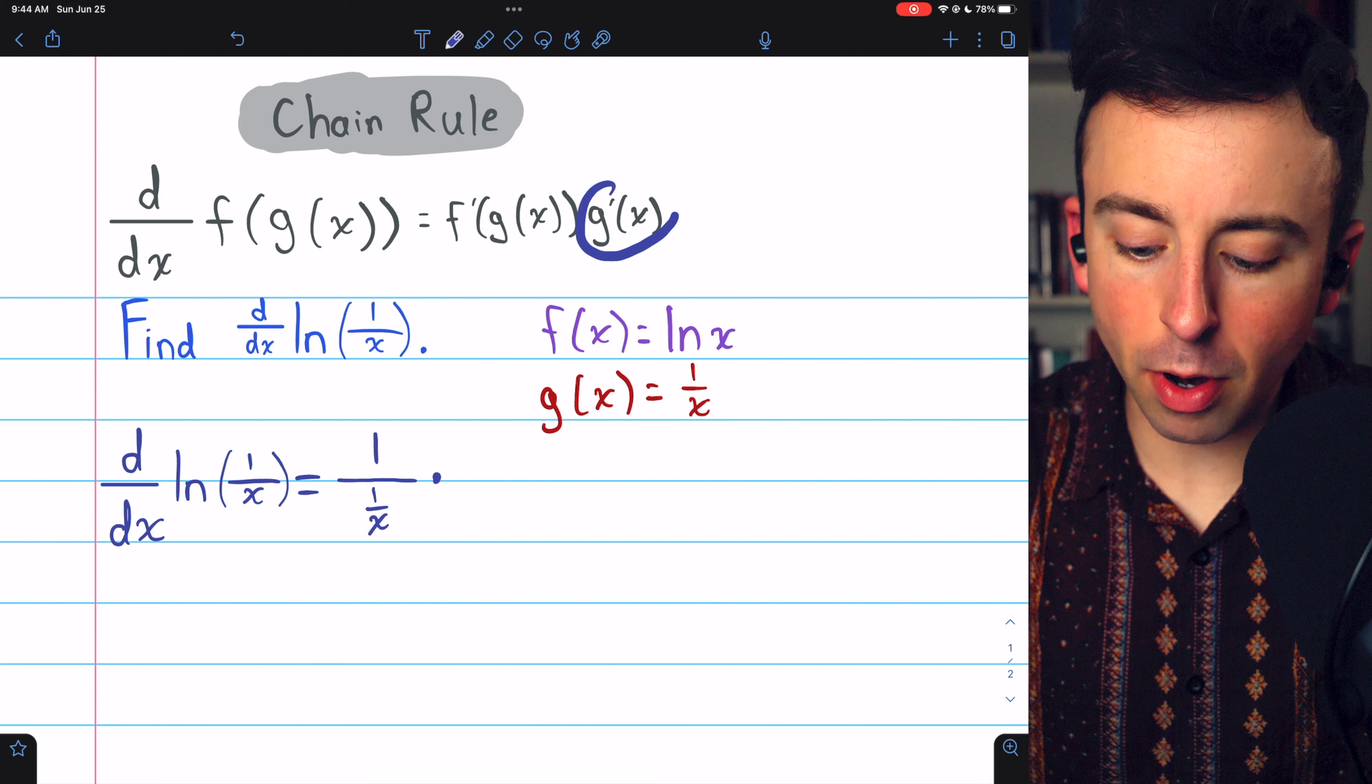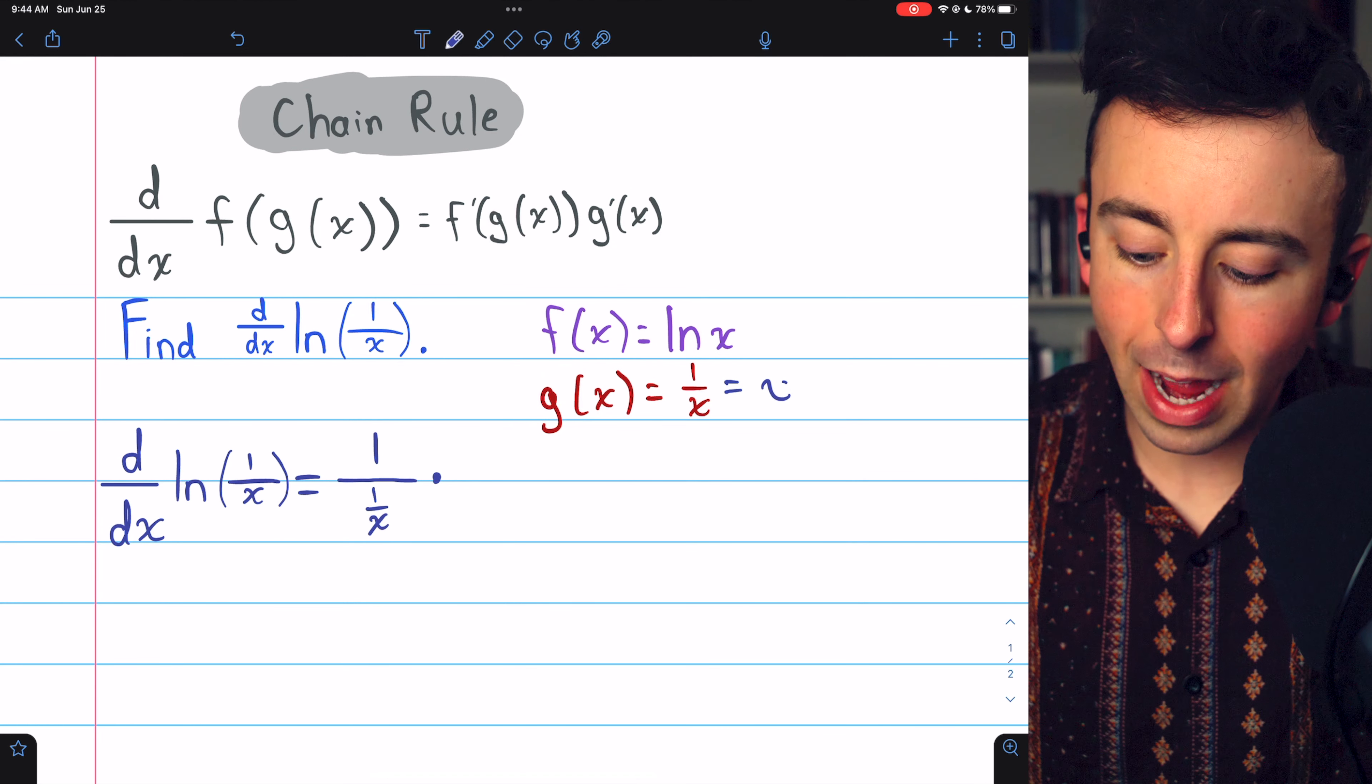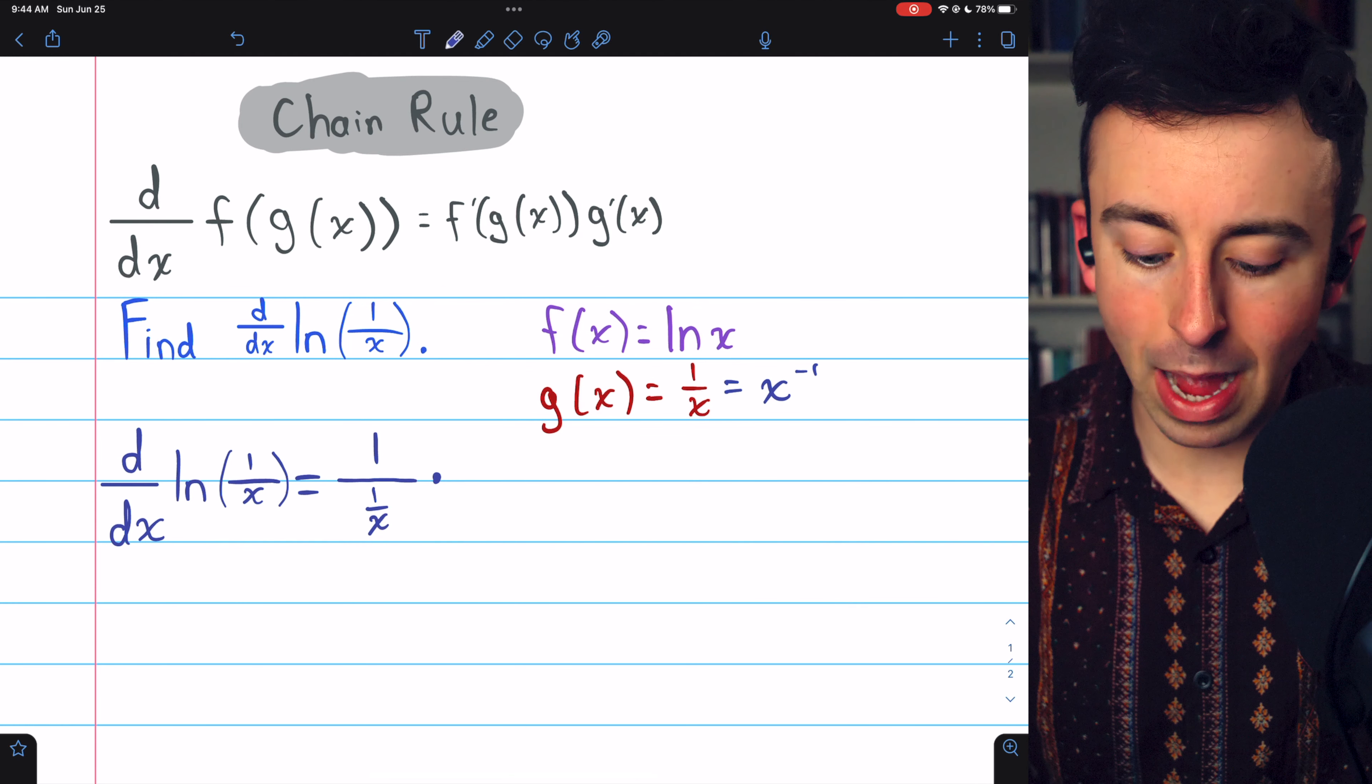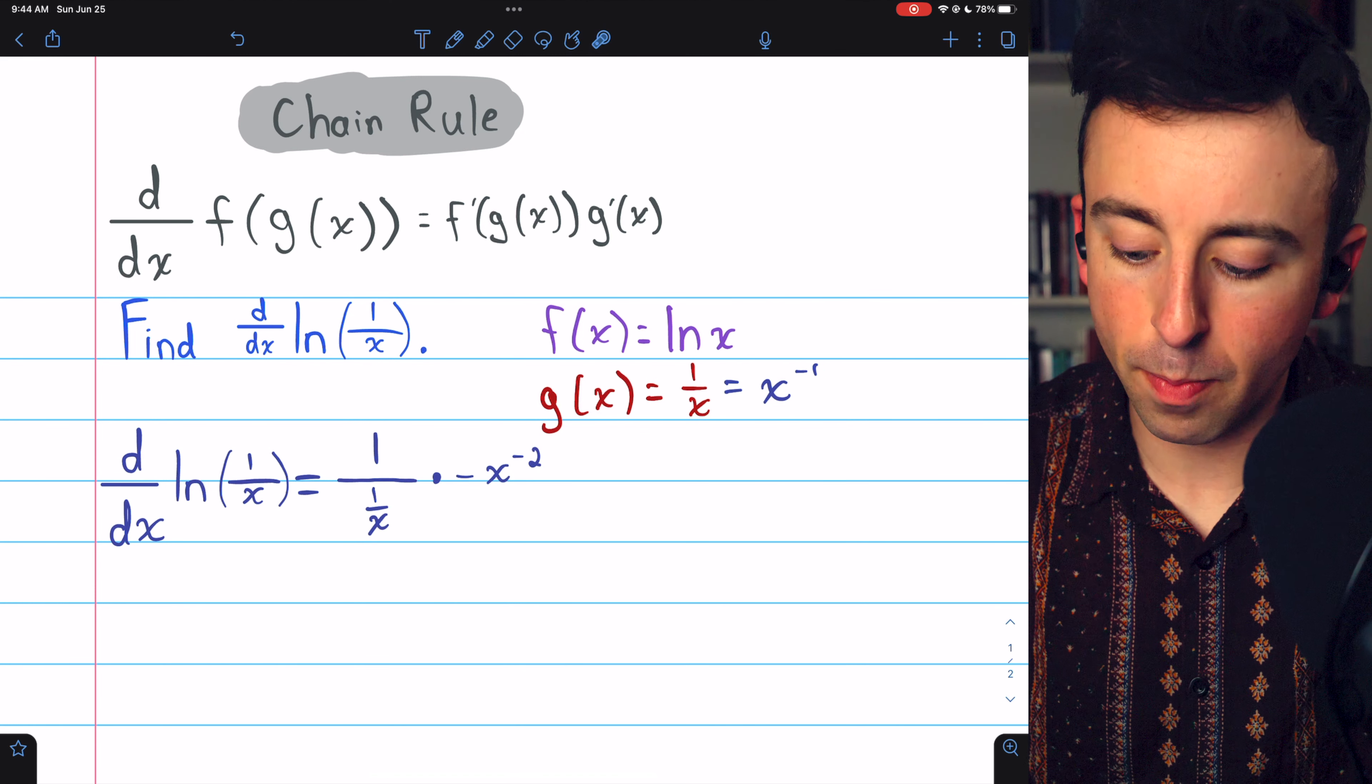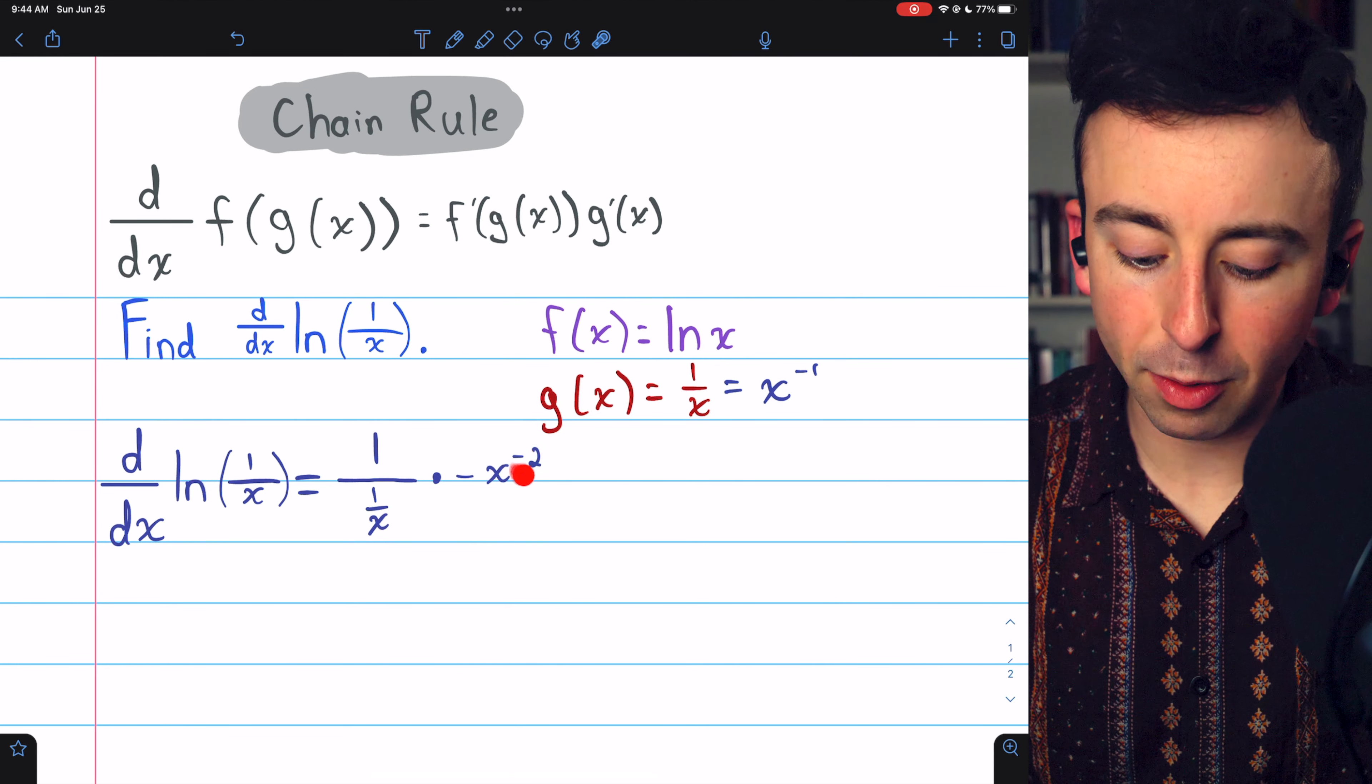We then multiply by g prime, the derivative of the inside function. The inside function is 1 over x, which is the same as x to the negative 1. So to take the derivative of that, we just need the power rule. That tells us the derivative will be negative x to the negative 2. The negative comes from bringing the exponent out front as a factor, and then we need to reduce the exponent by 1.